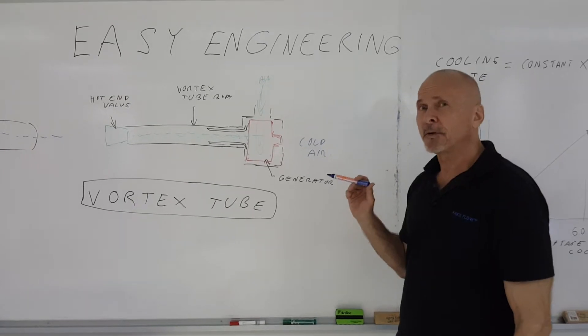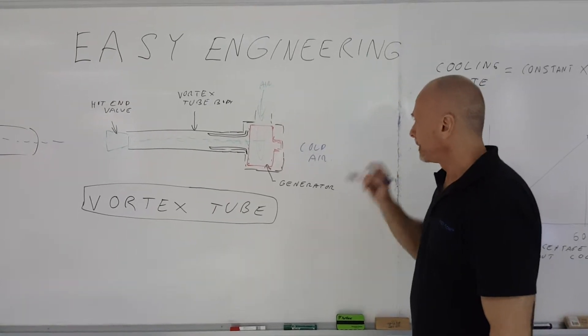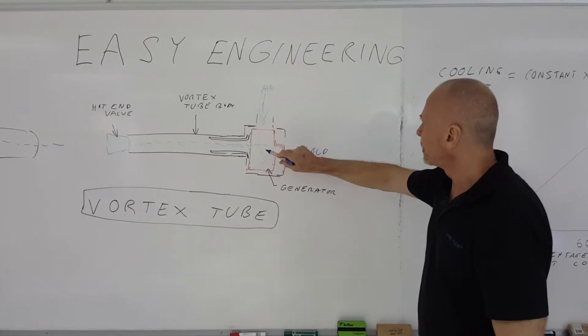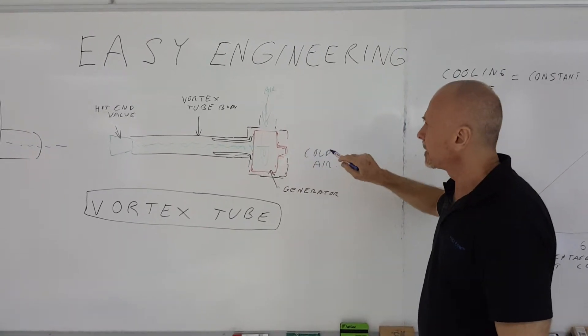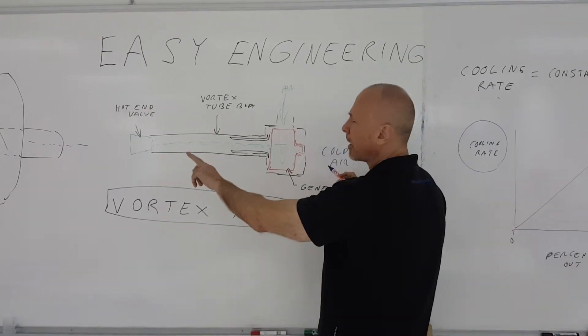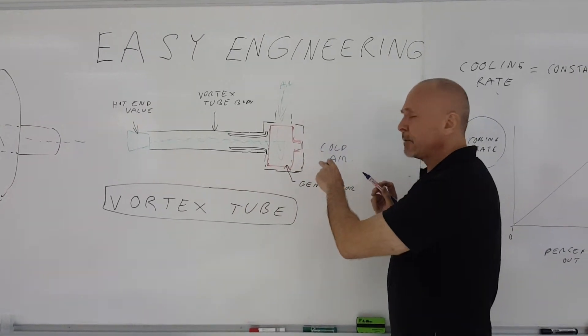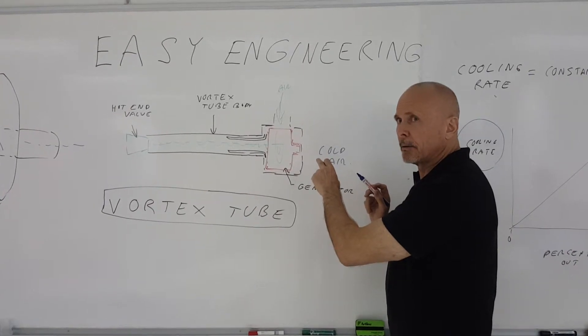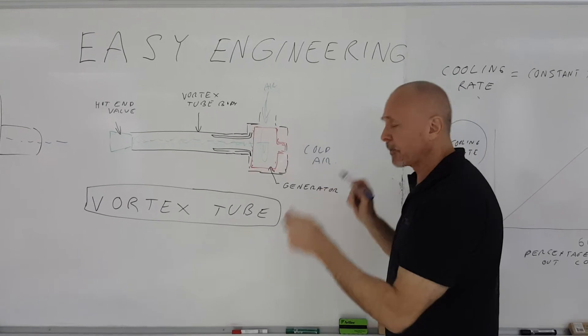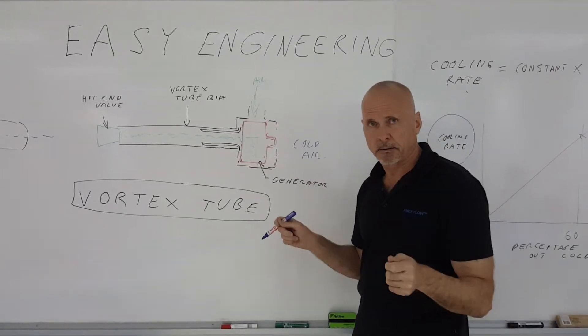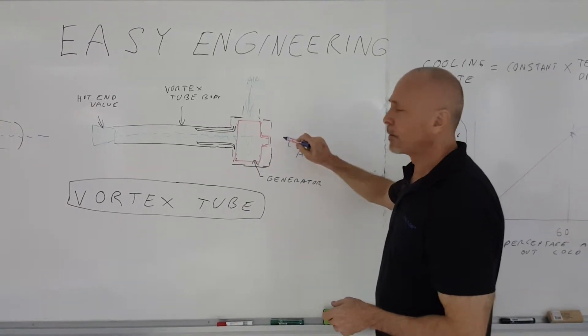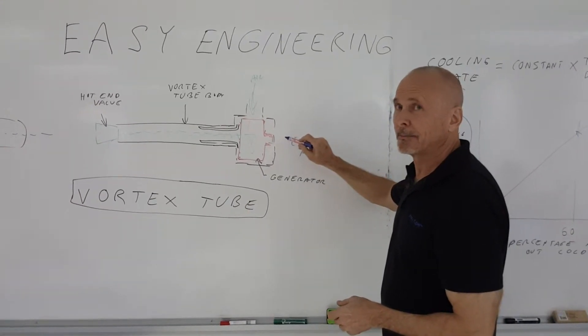Now, the funny thing about the Vortex Tube is that if I want to reduce the temperature at the cold end, I actually have to reduce the flow coming out. If I have more air at the hot end, the temperature at the cold end will get lower. So what happens with the Vortex Tube is that the flow rate and the temperature are interdependent. The higher the flow rate, the less cold the temperature is.